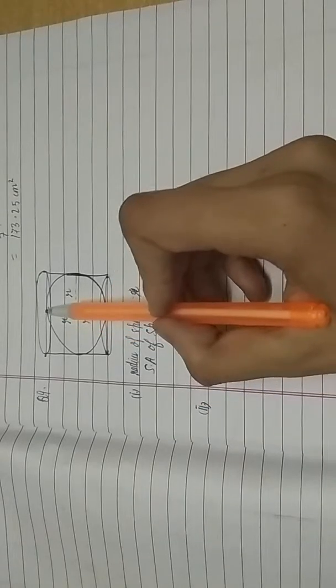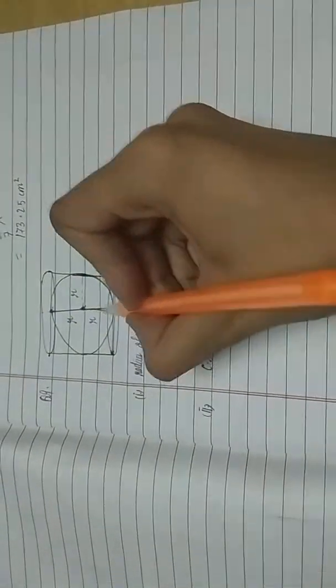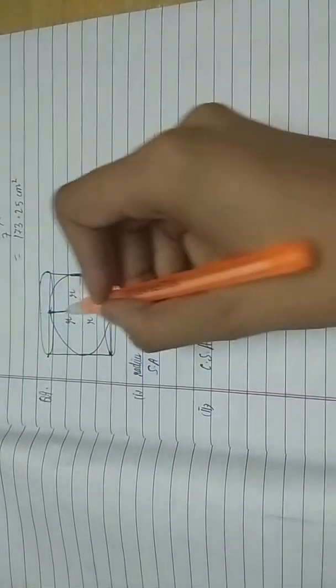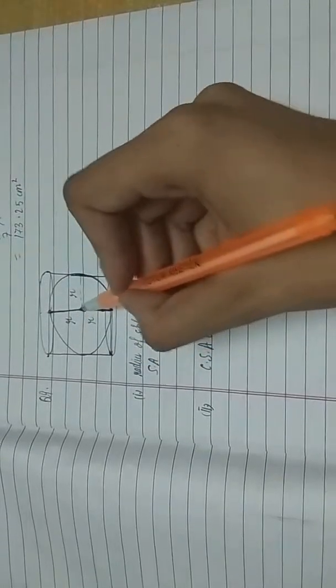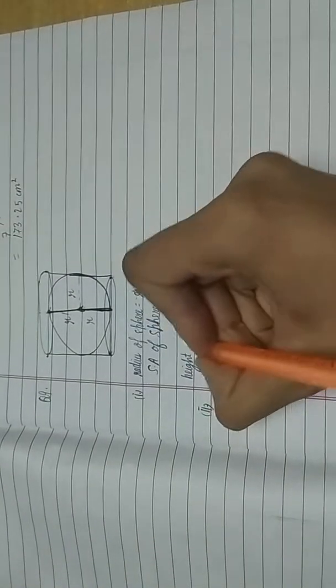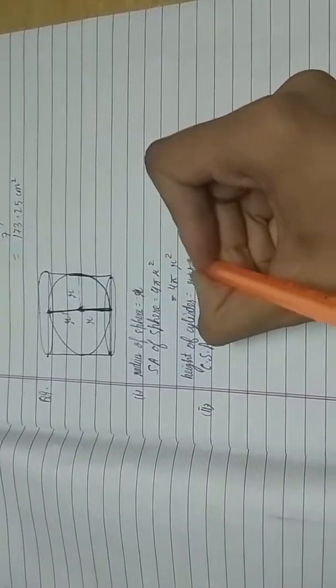We have the radius as r, but we don't have the height. See, this is the height of the cylinder. This part is r, this part is r. So r plus r is 2r. This would be the height of the cylinder. Height of cylinder would be equal to twice of r.